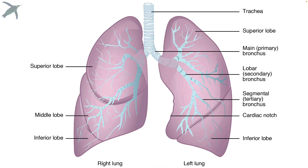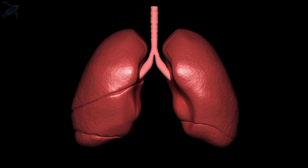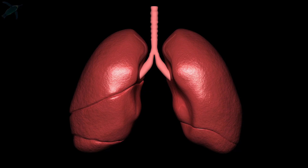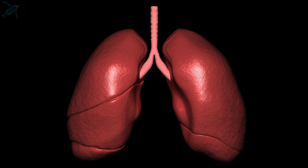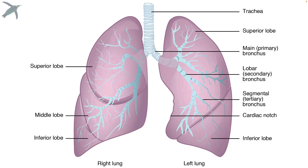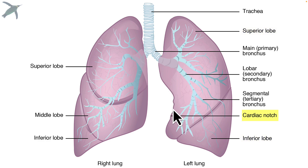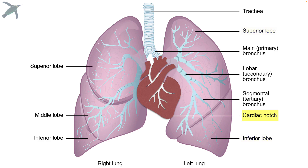Here you can see some of the bronchi with respect to the lungs. All of this is about getting air into the lung tissue. Lungs are not symmetrical — we have three lobes on the right side and two lobes on the left — and you'll notice the cardiac notch, because that's where the heart sits.